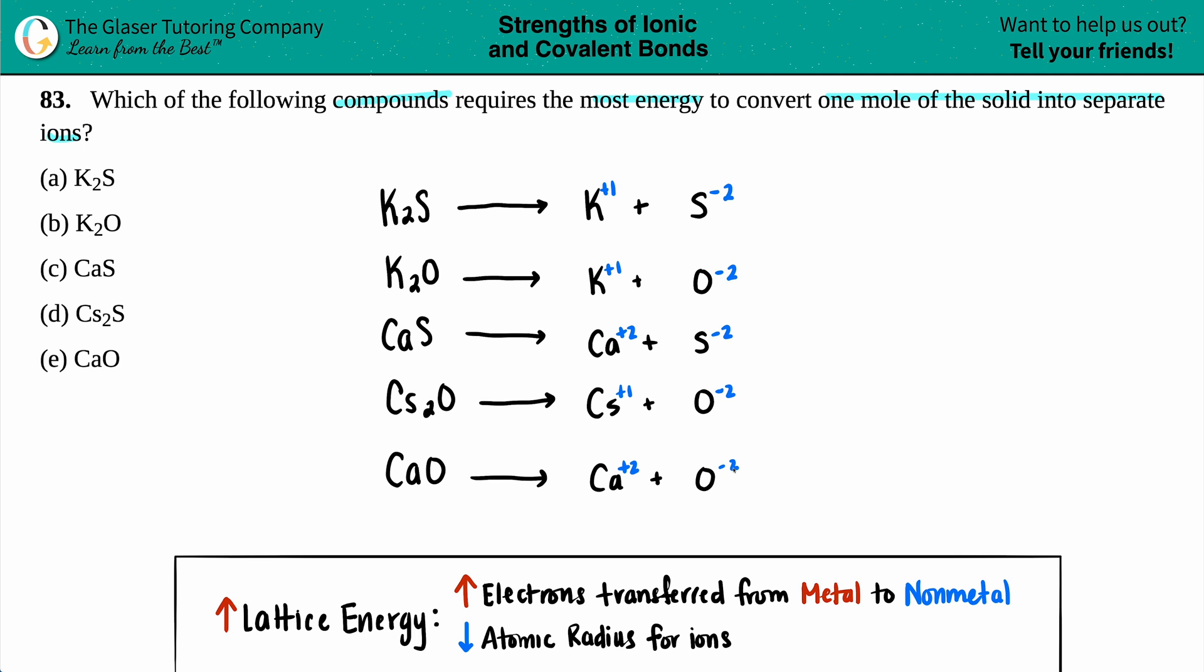Now, does it even matter if we're balancing the equation? That's not the point here. The point here is to notice what's going on with these ions. But it's always good practice to just make sure that you balance your equations. So you have two potassiums for K2S, so you do need a two in the front. You have two potassiums for K2O, so you do need a two in the front. You got two cesiums, so you need two Cs. And now we are balanced.